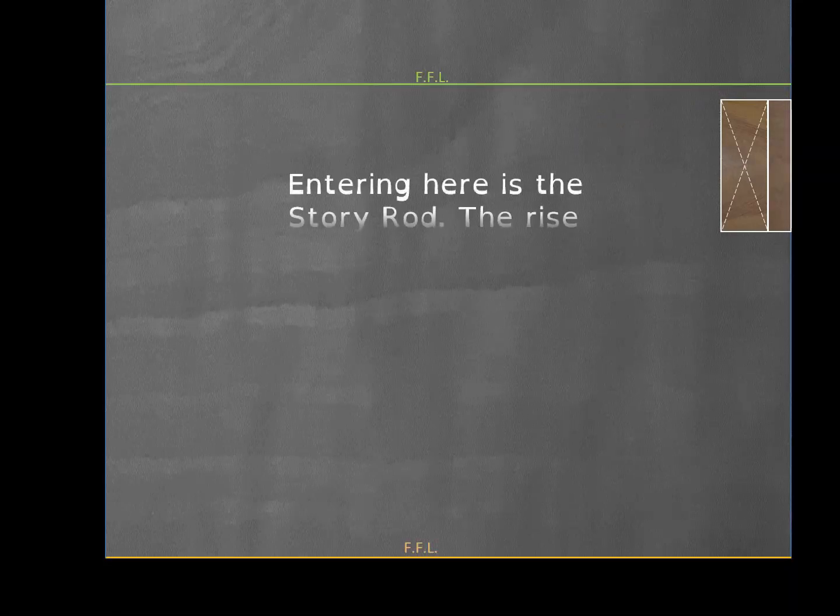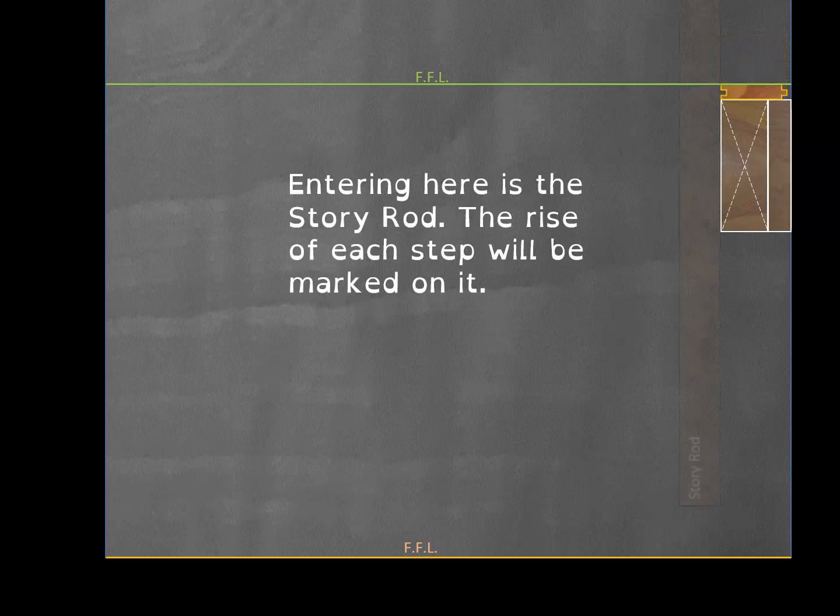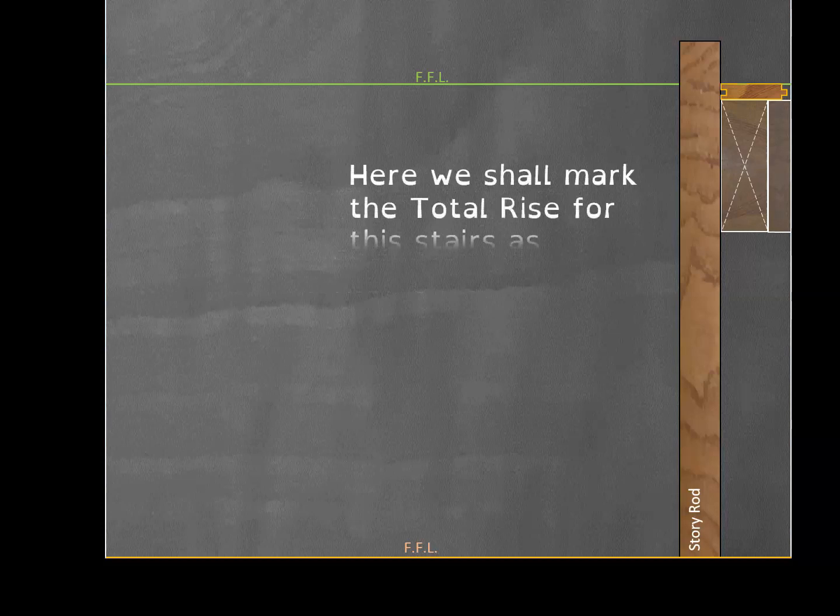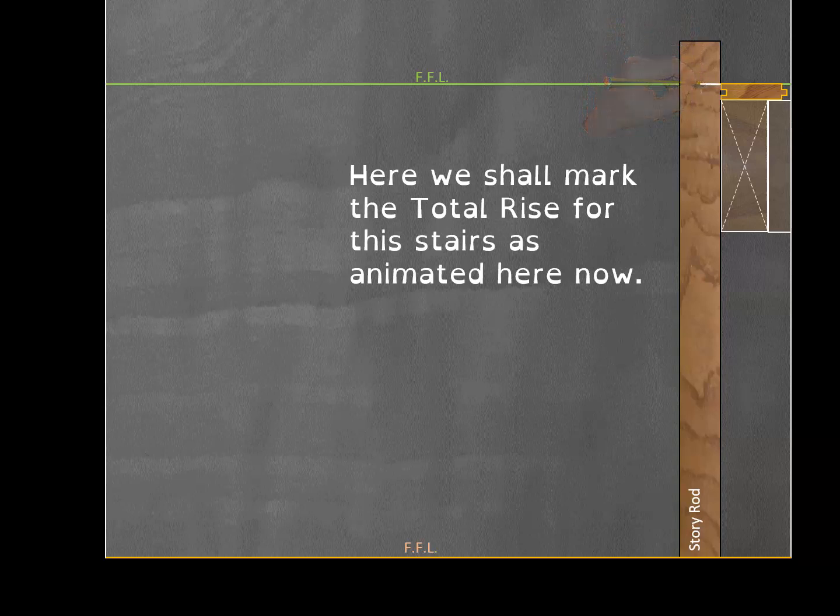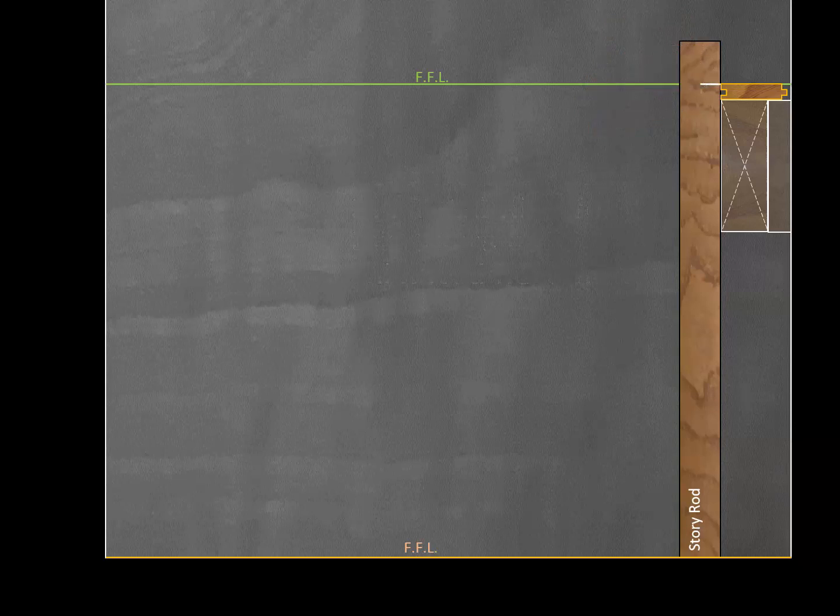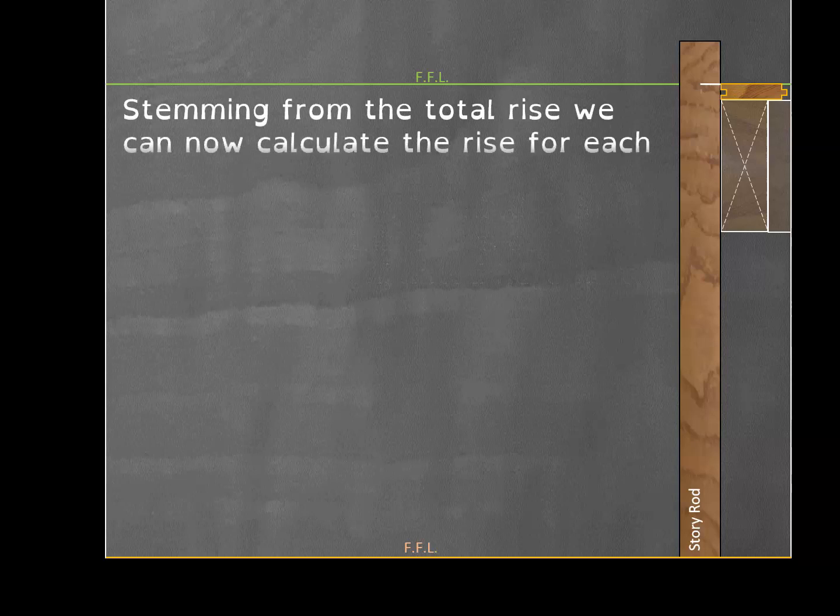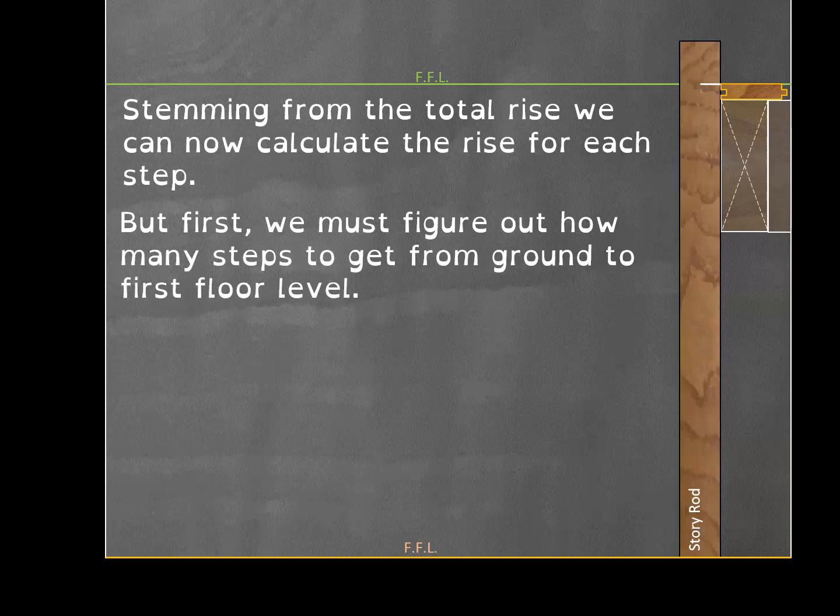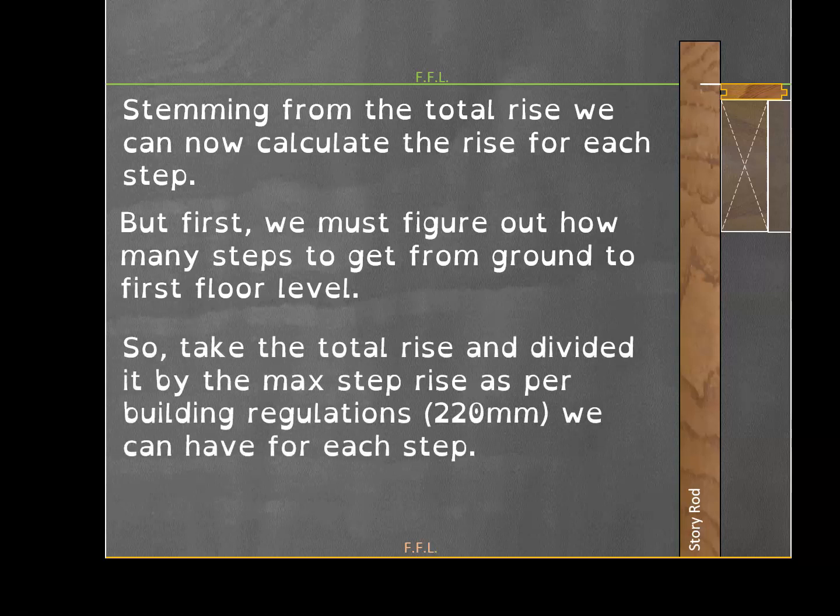Next you're going to get what's called a story rod, which is basically a 2x1 or 3x1 lath. Rest that on the ground and mark in line with the top of the floorboard. That's your total rise from one floor level to the next, which will have to be divided into steps. To figure out how many steps, divide that story rod distance by the maximum rise we can have for each step, which is 220 millimeters.